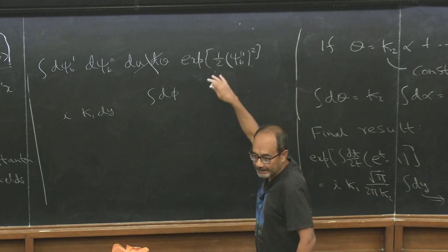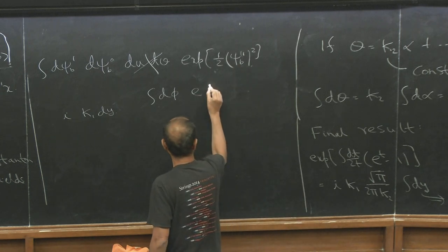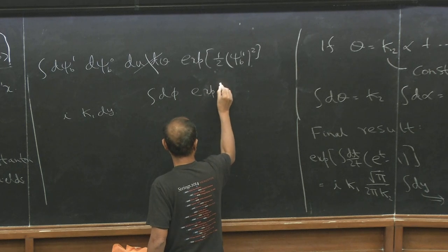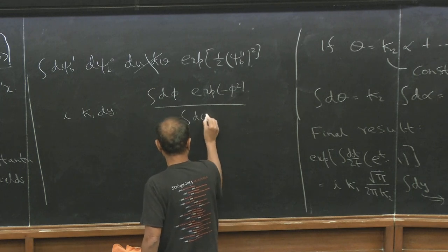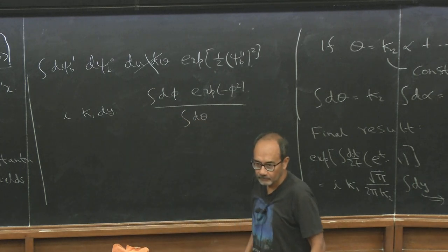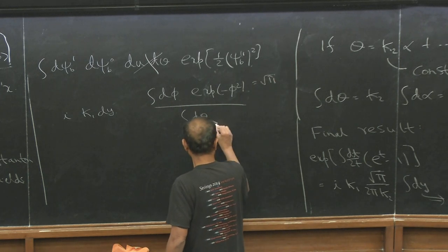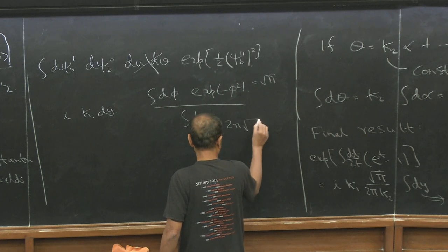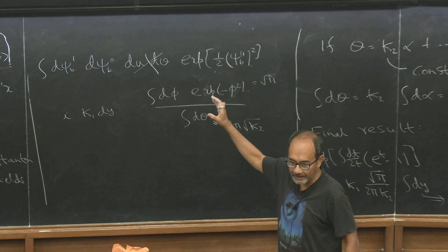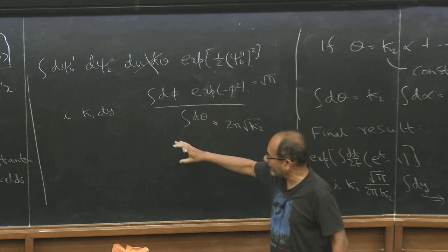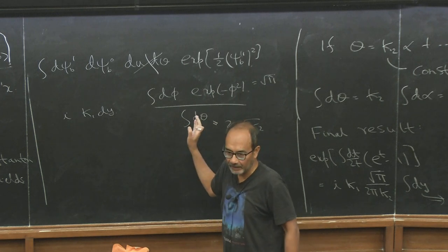Instead we integrate over the gauge invariant variable phi that we had. So this was in the gauge fixed form. In the gauge fixed form phi you are set equal to zero, that is why you did not have the phi. But in the gauge invariant form we have an e to the minus phi square and then you have to divide by the volume of the gauge group. Now this gives you root pi and this gives 2 pi root k2. So that annulus partition function now has been reinterpreted in this language where everything is finite, except that k1 and k2 you still have to calculate.